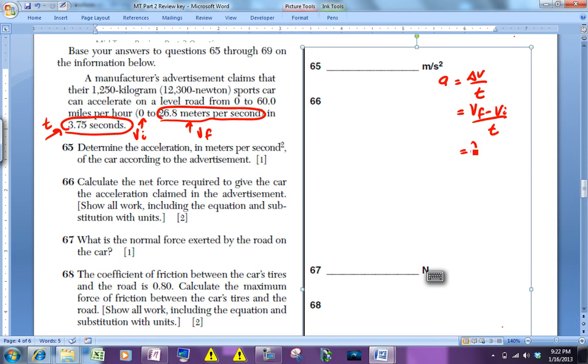Since your final velocity is 26.8, your initial velocity is zero meters per second and your time is 3.75 seconds. When you plug that into your calculator, what you should get is 7.15 meters per second squared.